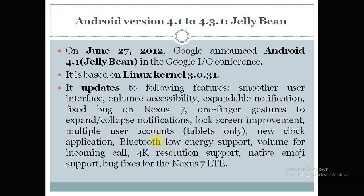The next version is Android 4.1 to 4.3.1, referred to as Jelly Bean. Jelly Bean was launched in 2012, announced as Android 4.1, and is based on Linux kernel 3.0.31. It updates several features including a smoother user interface, enhanced accessibility, expandable notifications, and removal of bugs in the Nexus 7.